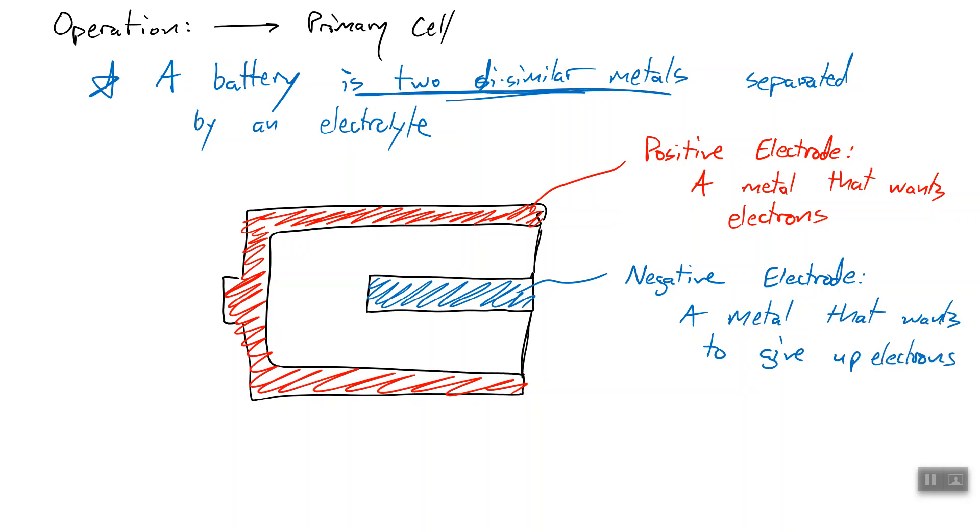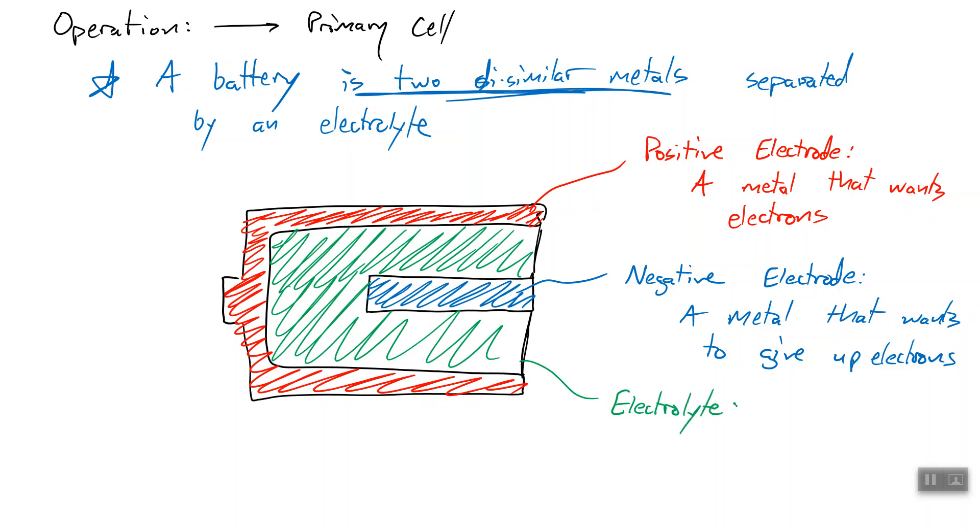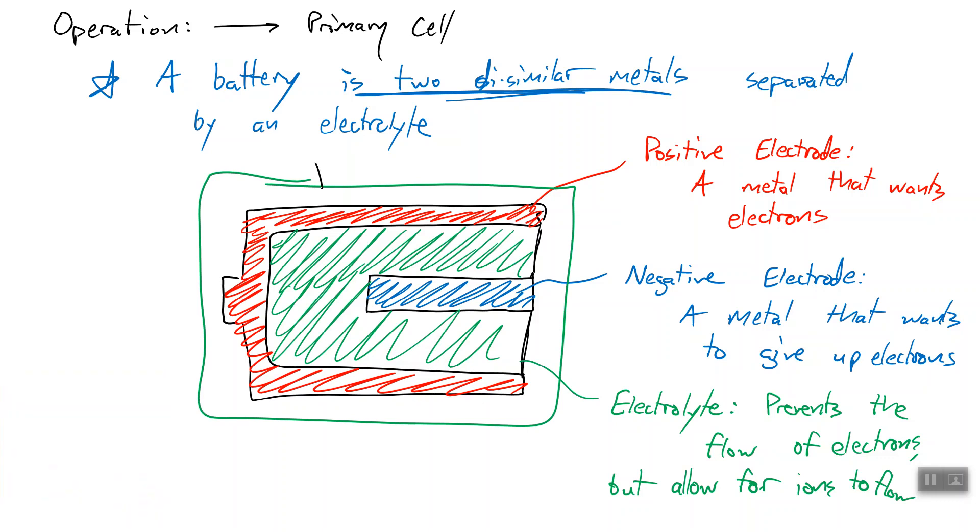You see we've got these two things. One that wants something, one that wants to get rid of that same thing, and they are close. But there's a problem. They are separated by this electrolyte. And for most batteries, this electrolyte prevents the flow of electrons, but it does allow for ions to flow. So we've got this potential. Think of this as a big box of potential. We have something here that wants electrons and something that wants to give it those electrons, but there is no path that they can use to exchange those electrons. So let's give them a path.